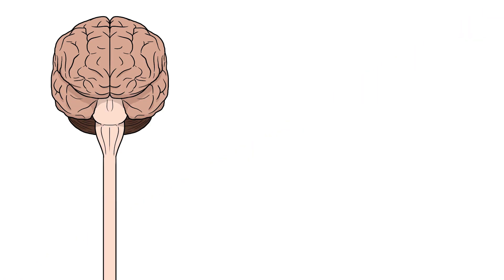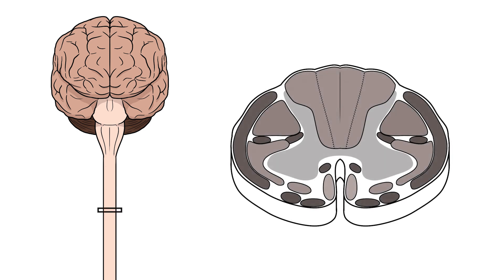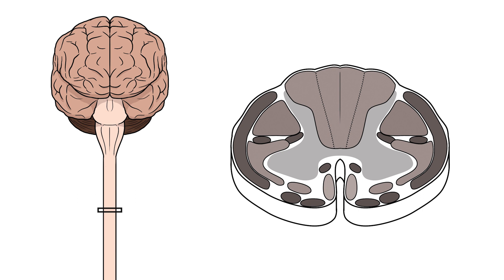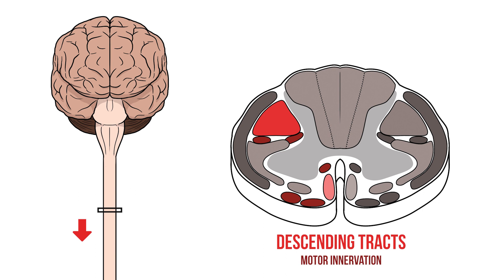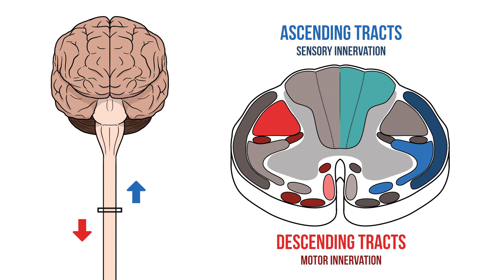The spinal cord is a structure that forms the connection between the brain and the body. Inside the cord are groups of nerve fibers that travel along it, known as tracts. Many of these tracts cross from one side of the body to the other, so that each half of the cerebrum controls the other half of the body. Broadly speaking, we can split them into two groups: descending tracts travel down from the brain and carry efferent motor fibers out to the body, while ascending tracts travel up the spinal cord and relay sensory information back to the brain.